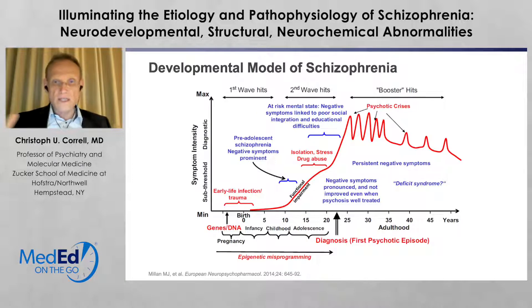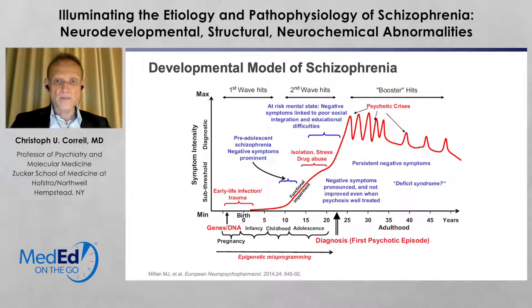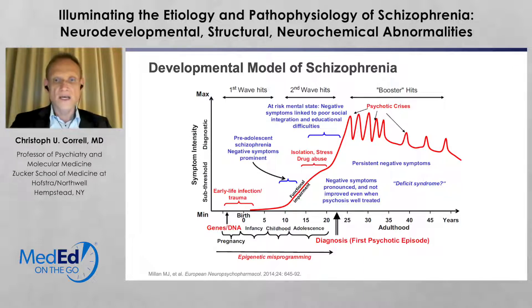Genetic risk factors are brought out by environmental stressors — either in utero, during birth, or later in life. Drug abuse, psychosocial stressors, and childhood abuse can all contribute. Some people have very little genetic risk and develop no psychosis regardless of stressors, while others have such strong genetic risk that environmental stressors aren't even needed. This genetic risk may be transmitted across families, or may arise as a spontaneous aberration.